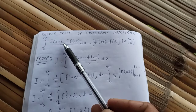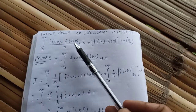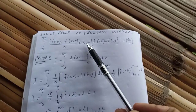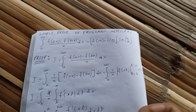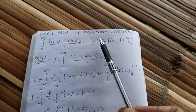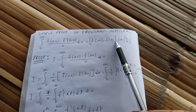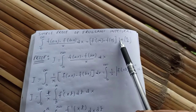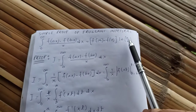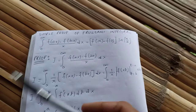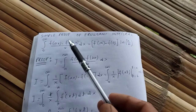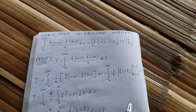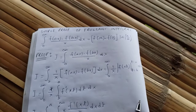The Frullani integral is the integral from 0 to infinity of [f(ax) - f(bx)] / x dx, which equals [f(∞) - f(0)] times ln(a/b), where a and b are constants.